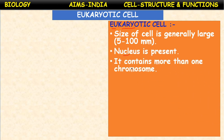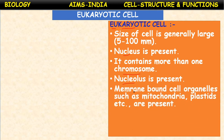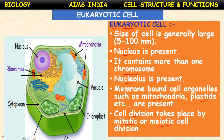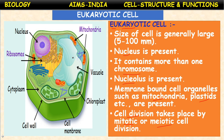Nucleus is present. It contains more than one chromosome — chromosomes are more in number. Nucleolus is present. Membrane-bound cell organelles such as mitochondria, plastids, and many more are present. Cell division takes place by mitotic or meiotic cell division — these are advanced cell divisions present in eukaryotic cells. A plant cell is taken as an example of a eukaryotic cell because it possesses a well-developed nucleus and membrane-bounded cell organelles.